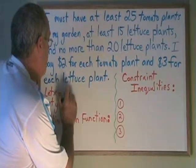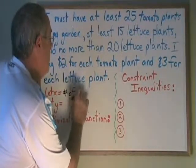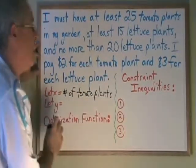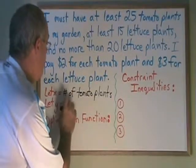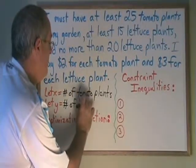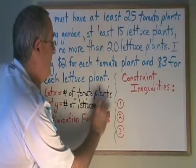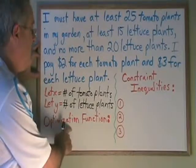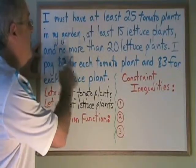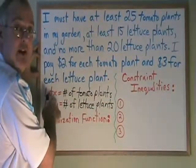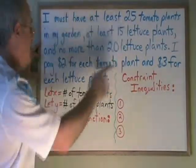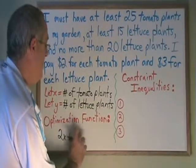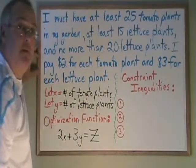Let x equal the number of tomato plants, and y will be equal to the number of lettuce plants. Now we can go ahead and make our equations. The optimization function is the money statement. We have $2 for each tomato plant, therefore $2 for each x, and $3 for each lettuce plant, that's $3 for each y. So we get 2x plus 3y equals our optimization symbol.